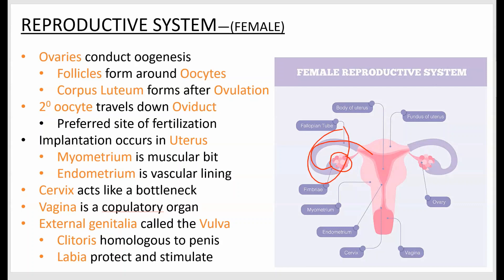Once you get to the uterus, if you have a developing embryo, you want it to implant — the uterus is the site of implantation. There are two tissue types: the myometrium, which is smooth muscle and causes uterine contractions, and the endometrium on the inside. The endometrium is where the mother develops her portion of the placenta, which supplies nutrients and holds the developing embryo and fetus.